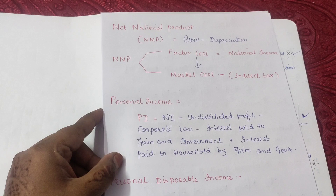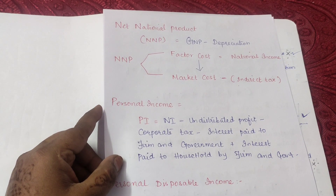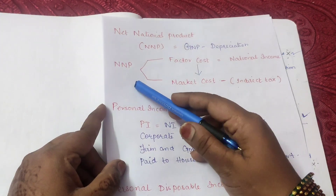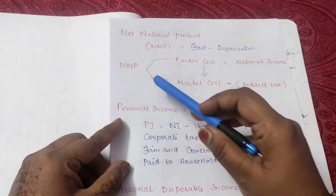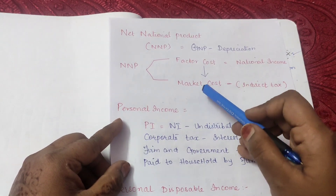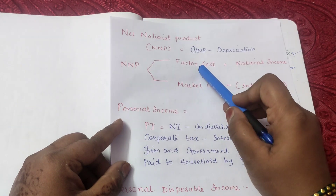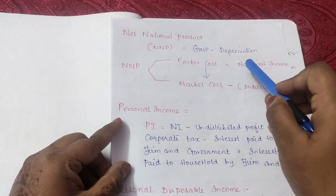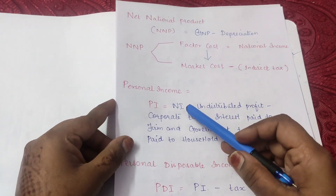NNP is when you remove depreciation from GNP. NNP exists at two costs: factor cost and market price. NNP at market price = C + I + G + X − M. If you remove indirect tax from that, you get NNP at factor cost, which equals our National Income.